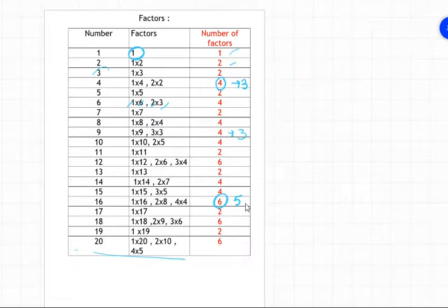It is required that you should write the factors in multiplication form, like one times two, one times three. This way, what happens is it reminds you that these are the two numbers, and no factors will be missed.